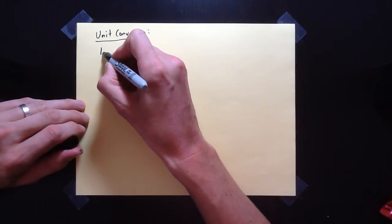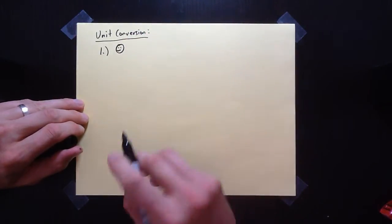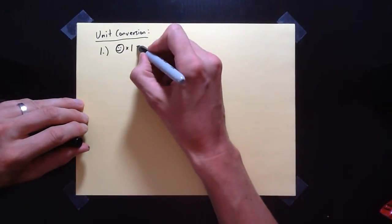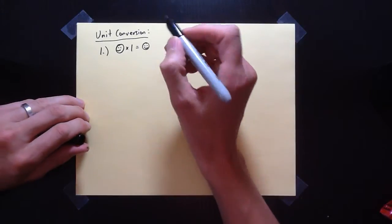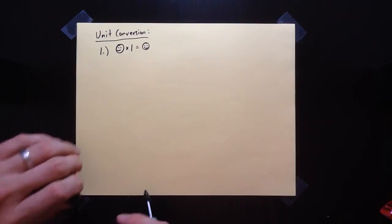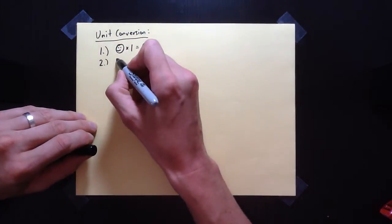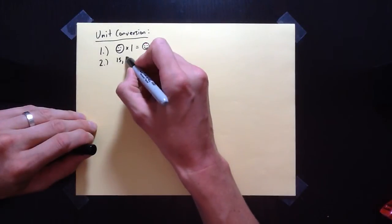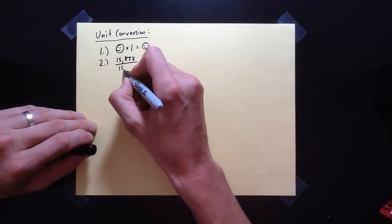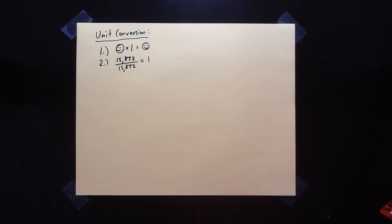This system is based off two mathematical principles. The first is that if you have any number — I'll have smiley face stand for that — if you multiply it by one, it's still smiley face. Multiplying by one does not accomplish anything; you get back the same thing you put in. The second is that any number, like 15,872, divided by 15,872 — the same thing — you'll get one. So any number divided by itself is just one.